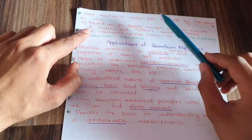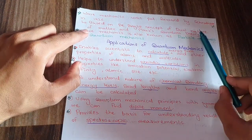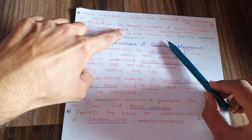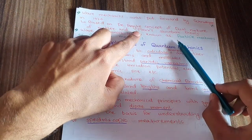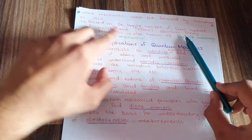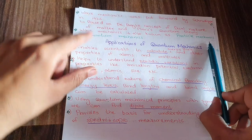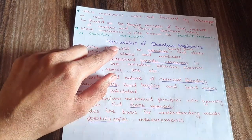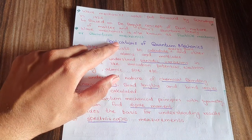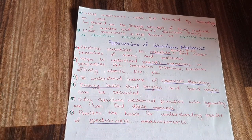Wave mechanics, put forward by Schrödinger in 1926, was based on de Broglie's concept of the dual nature of matter — meaning matter can act as both a particle and a wave. It was also based on Planck's quantum theory, which states that energy is emitted or absorbed in the form of quanta. This wave mechanics is also known as quantum mechanics.